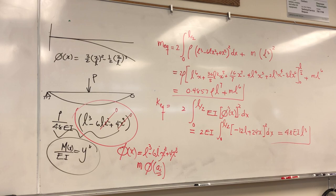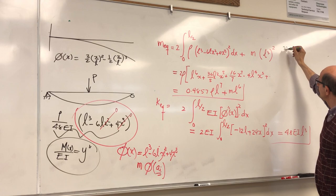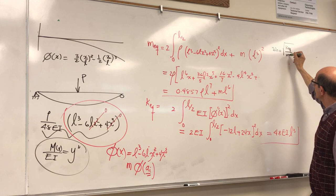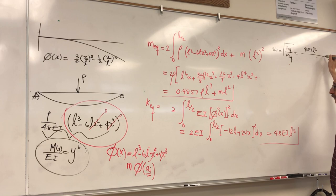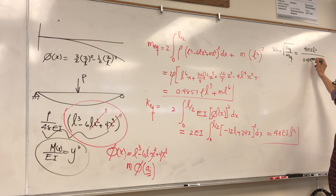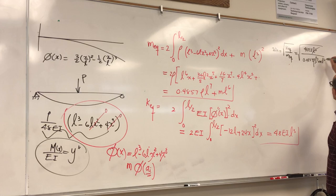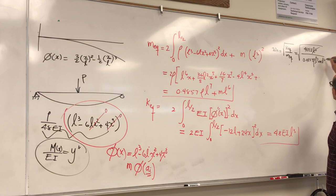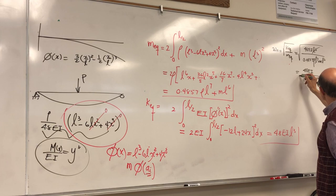Therefore, the natural frequency is sqrt(k_eq / m_eq), which gives: omega_n = sqrt(48·EI/L^3 divided by (0.4857·rho·L^7 + m·L^6)). Simplifying by canceling L^3, this becomes sqrt(48·EI / (0.4857·rho·L^4 + m·L^3)).